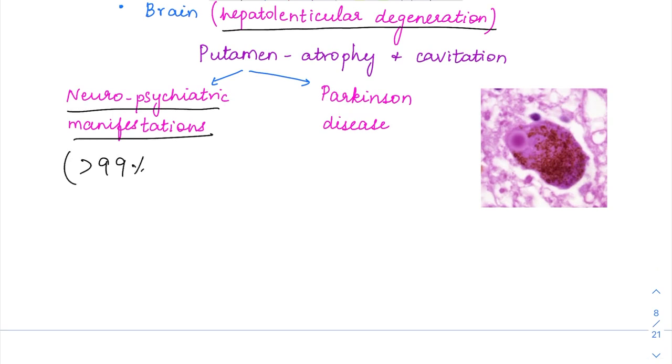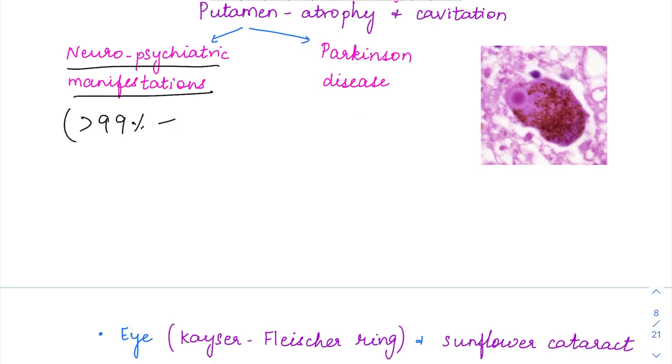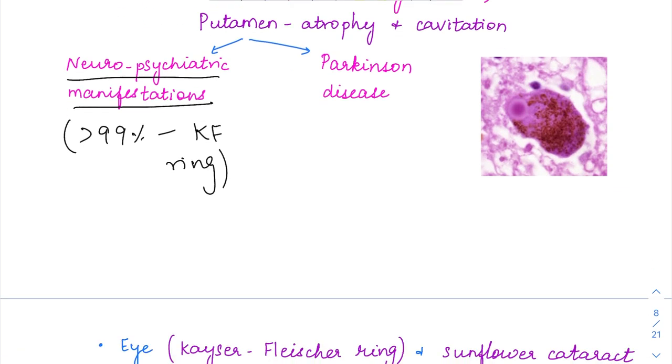More than 99% of patients present with neuropsychiatric manifestations associated with KF ring. Since basal ganglia is affected, Parkinsonism—which is also due to dopaminergic neuron deficiency in the basal ganglia—can be seen in Wilson's disease. In Parkinsonism, you see Lewy bodies composed of alpha synuclein, which have a characteristic darker center and peripheral halo. Lewy bodies can be seen in Wilson's disease as well.